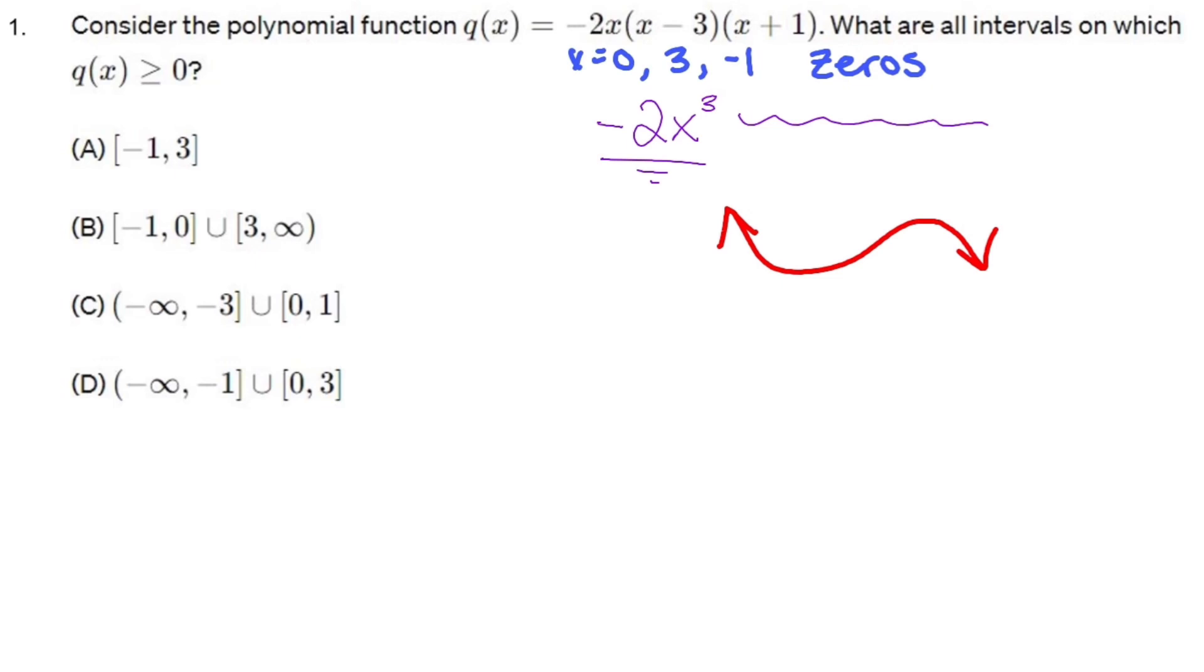Now what I'm going to do is make a sign table or sign chart as some people might call them. This sign table takes my zeros and the graph and puts them together to find out where this is positive. This graph in red crosses the x-axis at -1, 0, and 3 in that order.